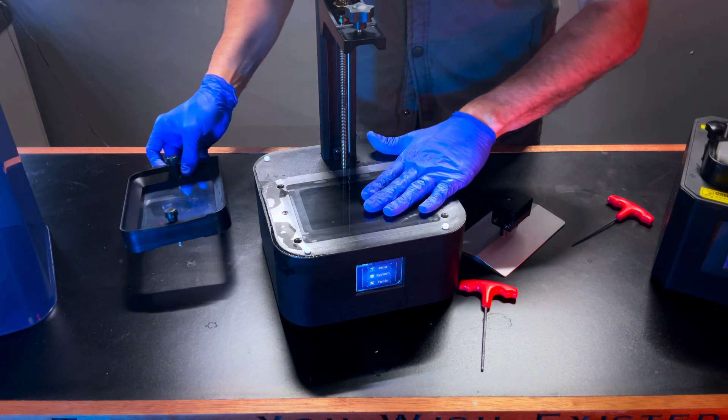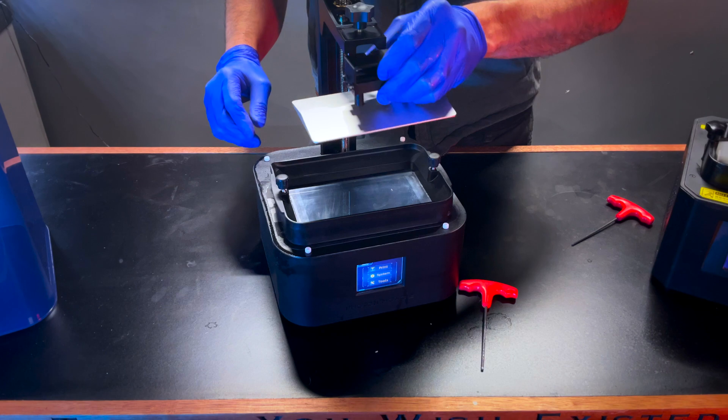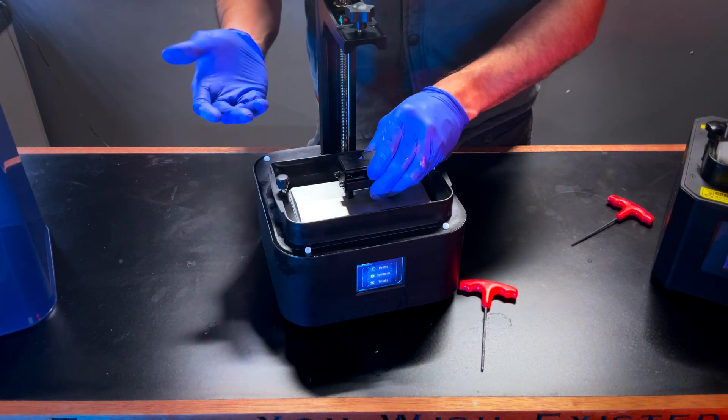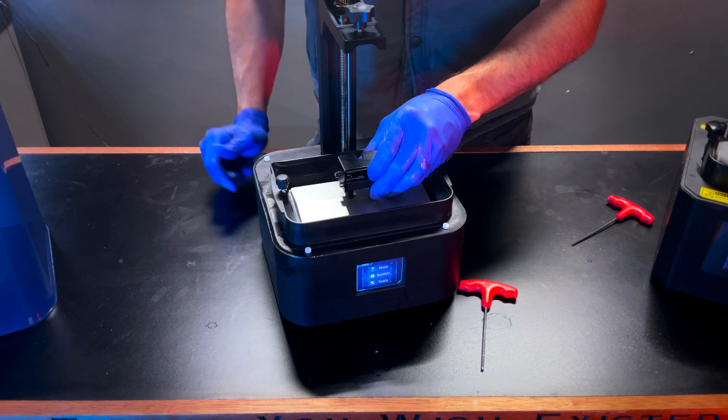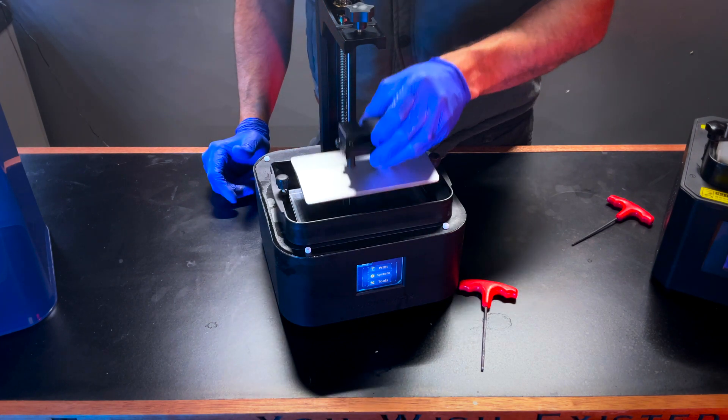This is your screen. The way this printer works is this is filled with resin. This build screen comes down. Your screen turns on the portion of it that it needs to harden to build your 3D print. And then this lifts and it does that repeatedly over and over.